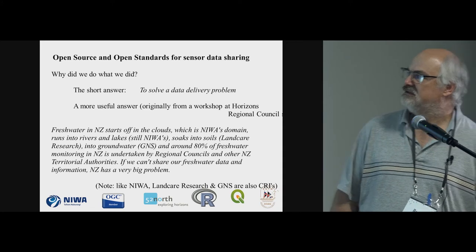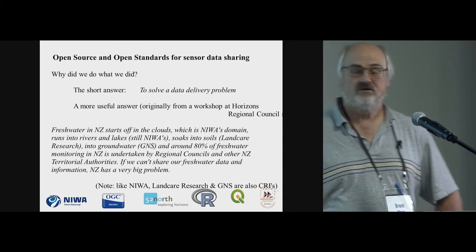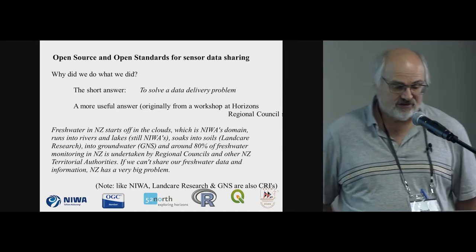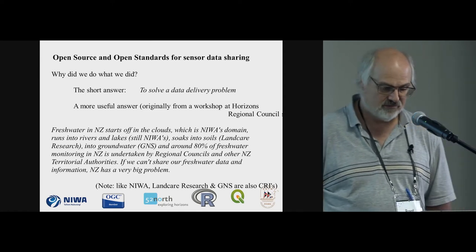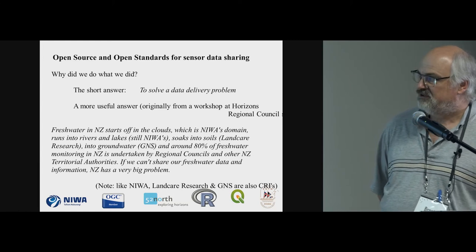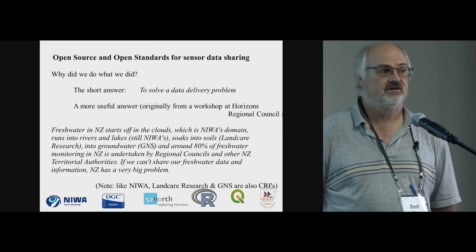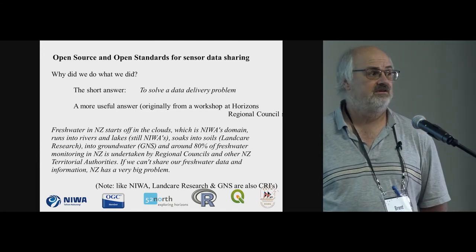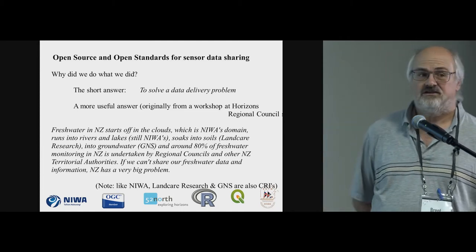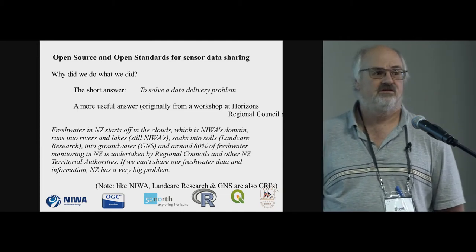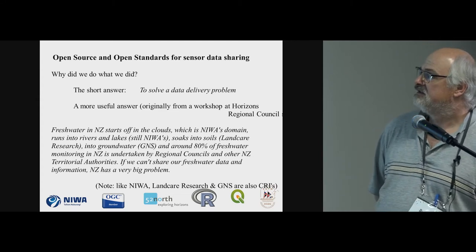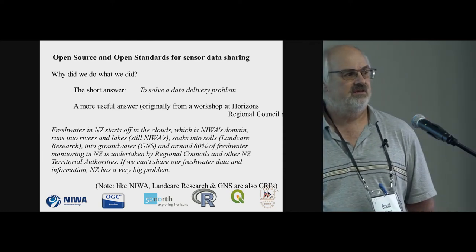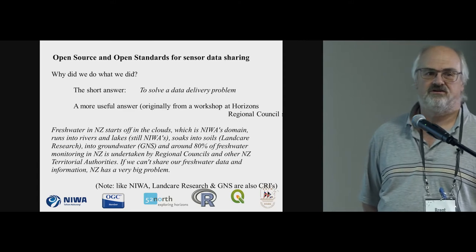Why did we do it? Essentially it was a common problem — just how to get data delivered to people who wanted access to it. We had a discussion about this at a workshop at Horizons Council some years ago. Freshwater in New Zealand, if you're not familiar with it, is a pretty vital asset that's in increasingly short supply. It starts off as precipitation — snow, hail, rain, and sleet — which is sort of where NIWA's research covers it. It soaks into soils and becomes part of that, which in New Zealand is researched by Landcare Research.